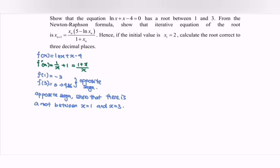From the Newton-Raphson formula, we have x_{n+1} = x_n - f(x_n)/f'(x_n).